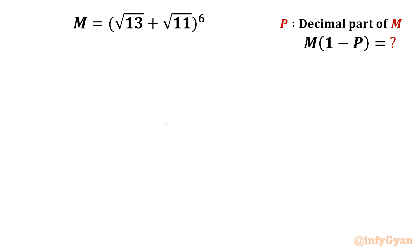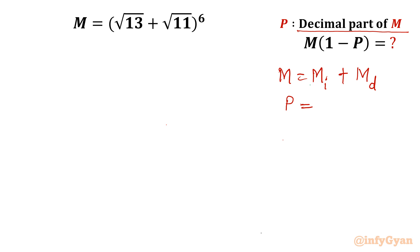If you want to attempt by your own you can pause this video and then check the solution. I will begin by writing our m. The nature of m would be mi plus md, where mi is the integer part of m and md is the decimal part of m. So we can conclude that p is equal to md, which means p is equal to m minus the integer part of m.